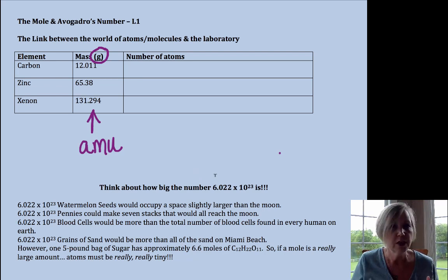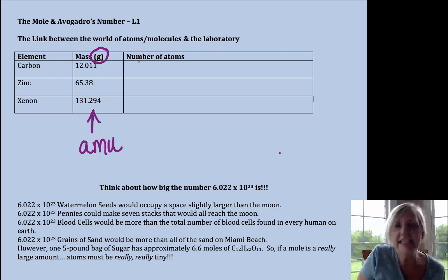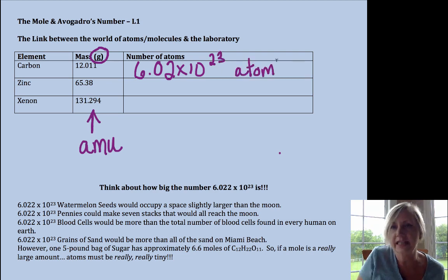And then we counted. So we weigh out 12.011 grams of carbon and we count how many atoms there are. Now this is a thought experiment because this would take, oh say 10 to the 14th years or something like that. What we would find is that we have 6.02 times 10 to the 23rd atoms. So that's pretty interesting.